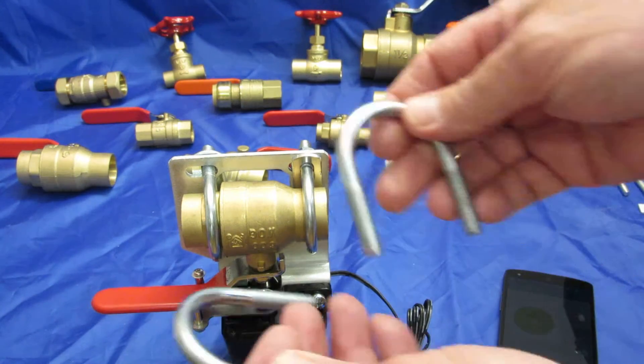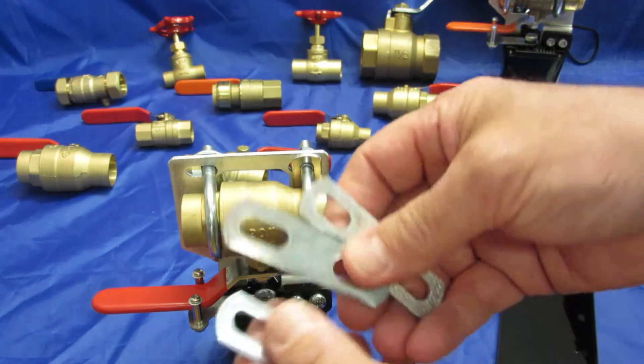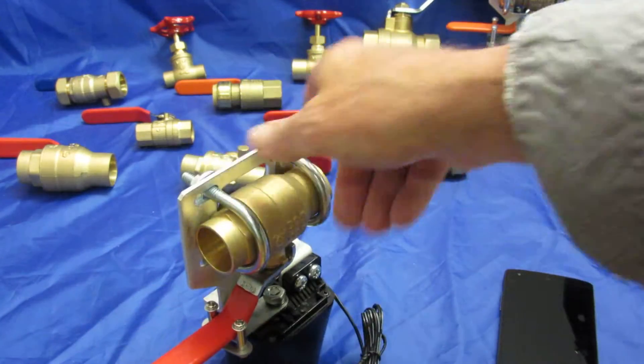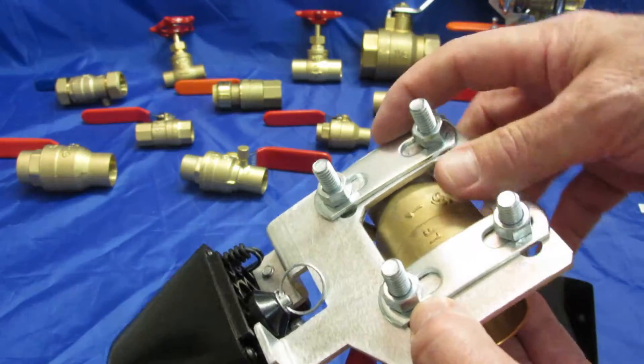For the one-inch valve, you use the largest U-bolts. You need three of these spacers. Two of them act as washers, one here and one here.